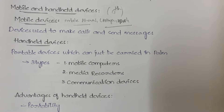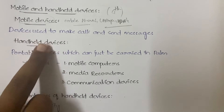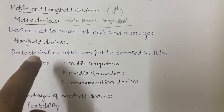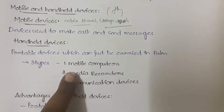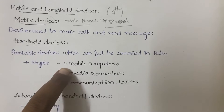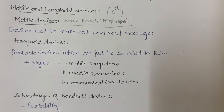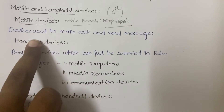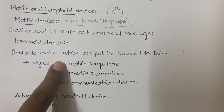What about handheld devices? The word itself says 'handheld' — you can hold them in your hand. They are portable devices, meaning you can move from one place to another and they can just be carried in your palm. There are three types of handheld devices: mobile computers, media recorders, and communication devices.